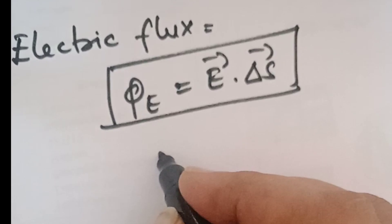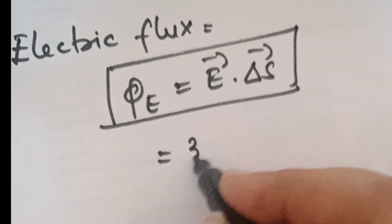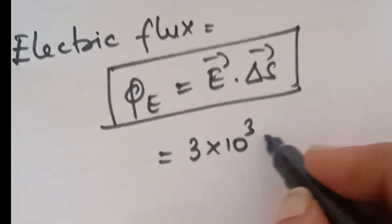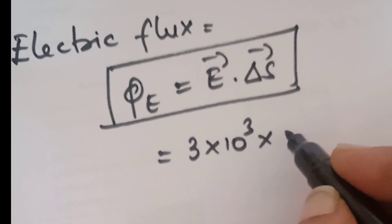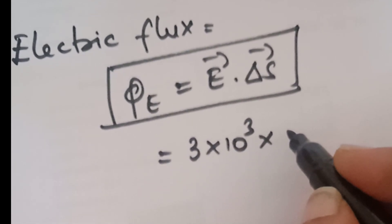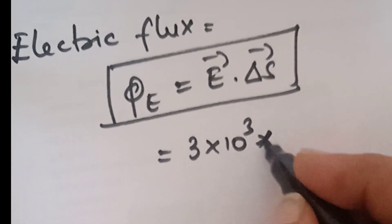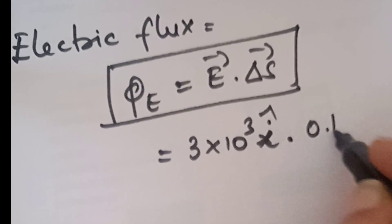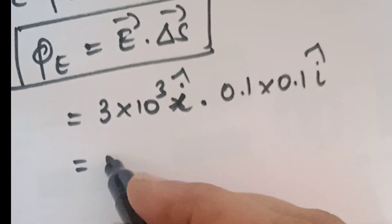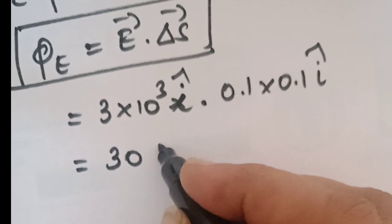So E vector 3 into 10 power 3 i cap dot del S vector 0.1 into 0.1 i vector. Therefore 30 newton meter square per coulomb.